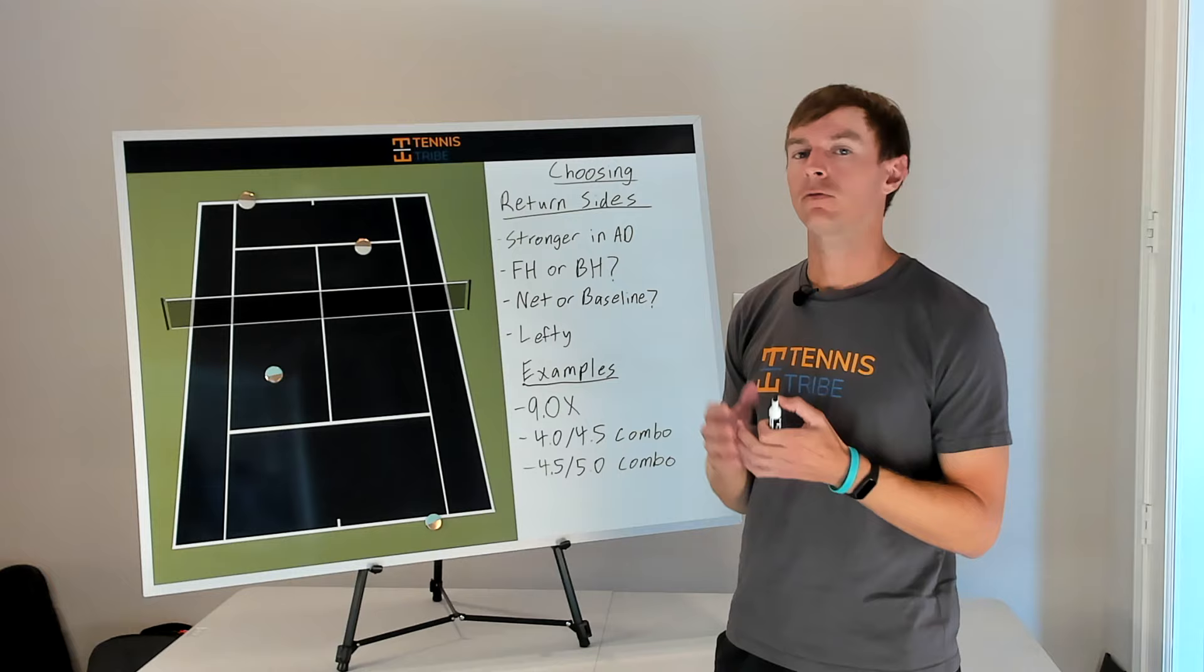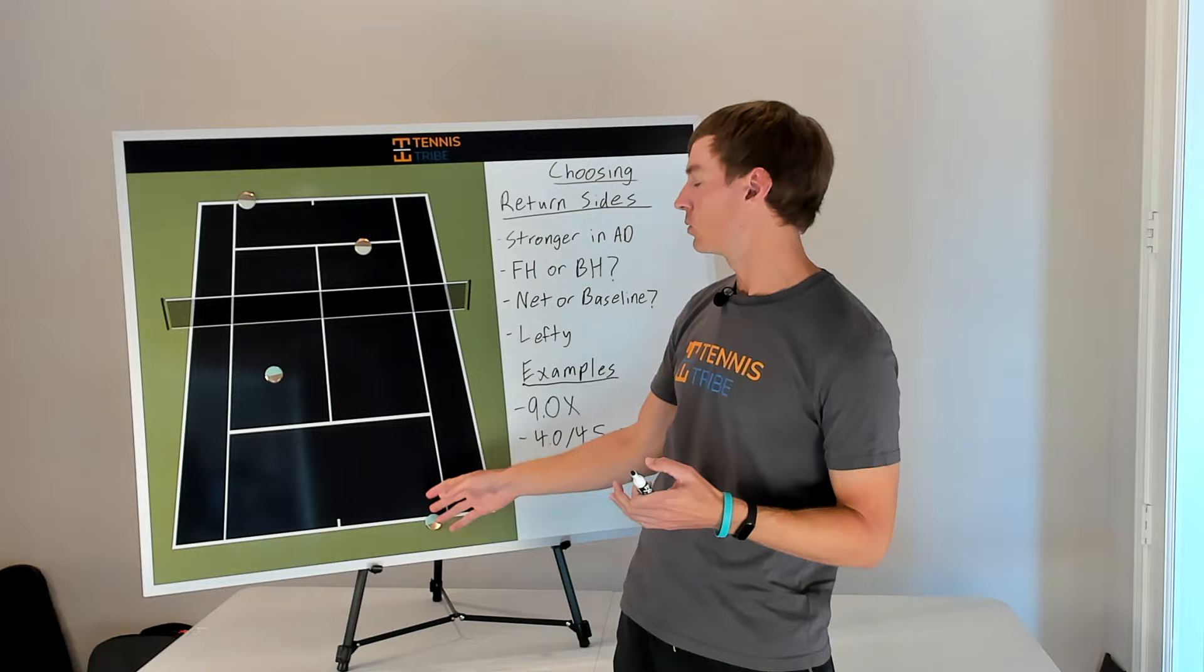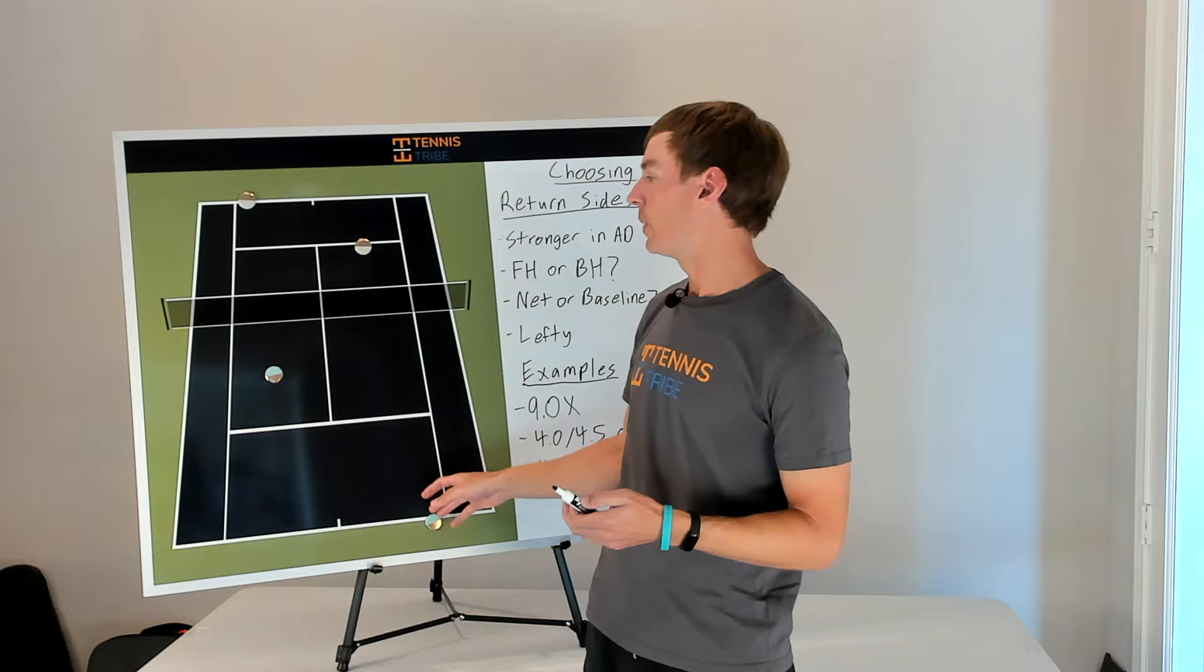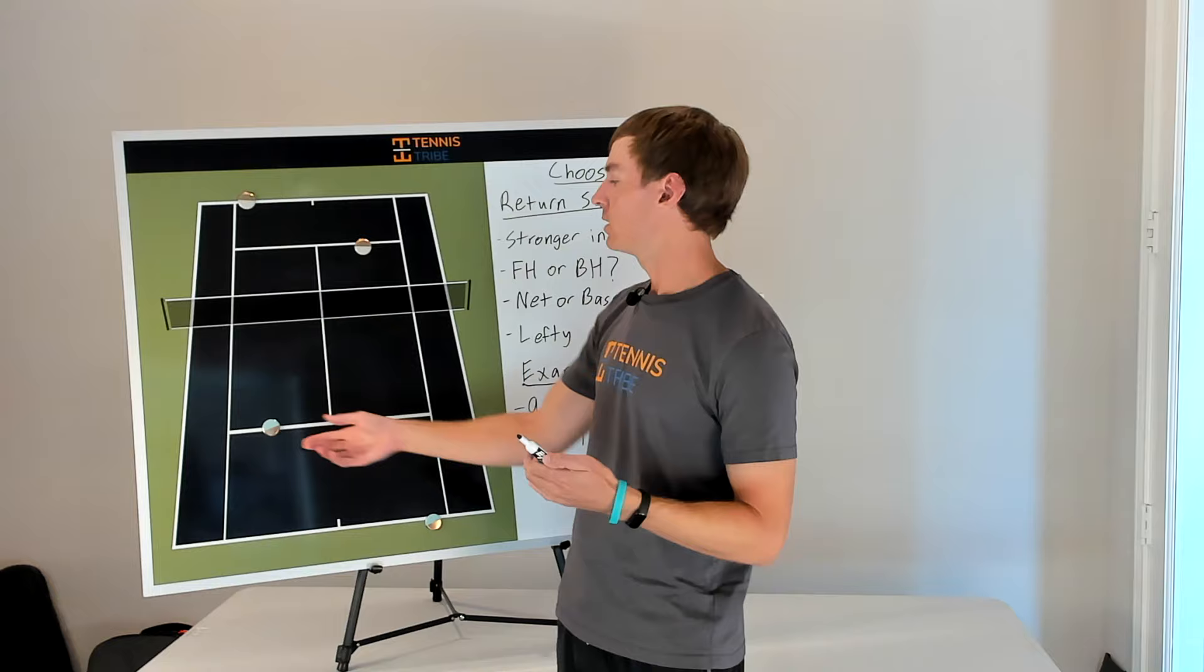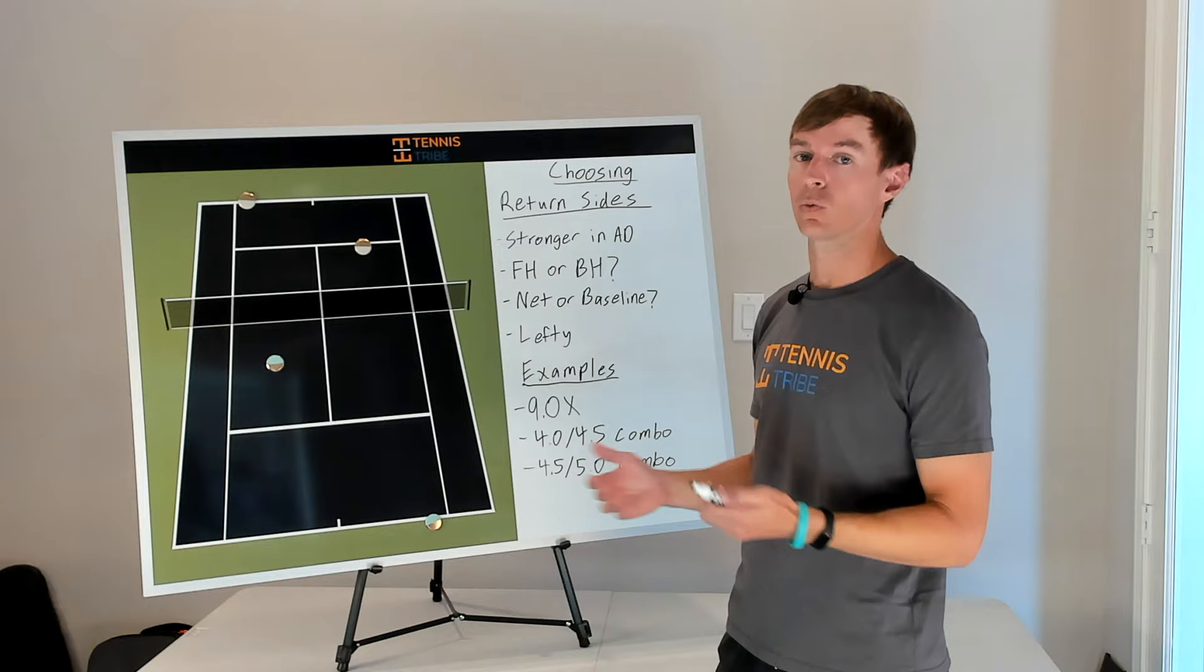So for that reason, you might consider playing your stronger player in the deuce court because when you're down 15-40, if your odds of winning that point are better, then maybe you can get back into a deuce game and you want your better player taking more cuts of the ball. One of the best tactics you can use with a weaker partner is find ways to force the opponent to hit to you and playing in the deuce court is one of those ways you can do that.